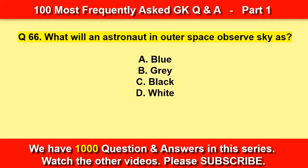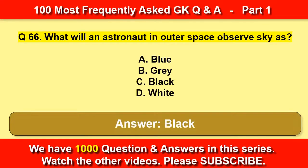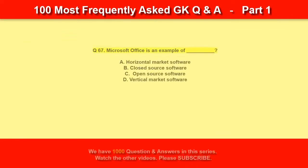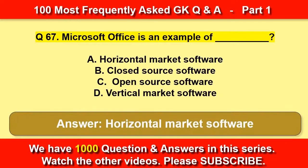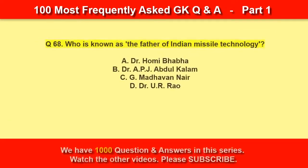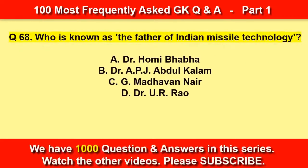What will an astronaut in outer space observe the sky as? Black. Microsoft Office is an example of horizontal market software.